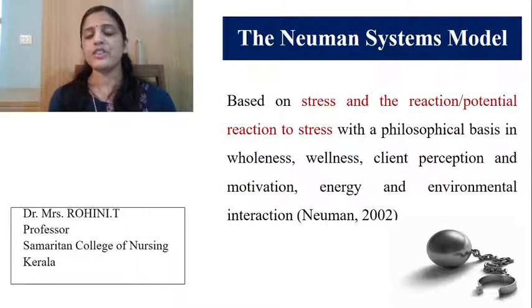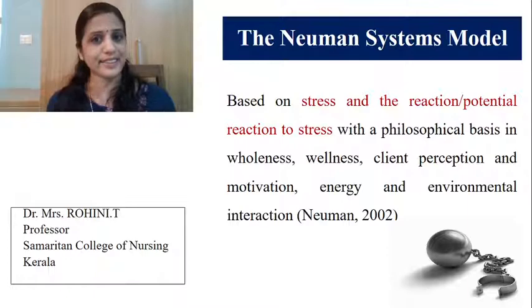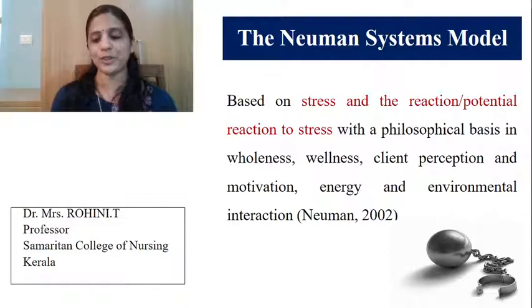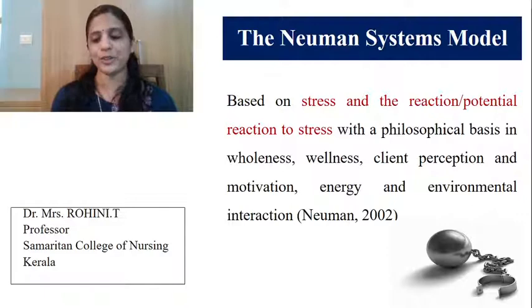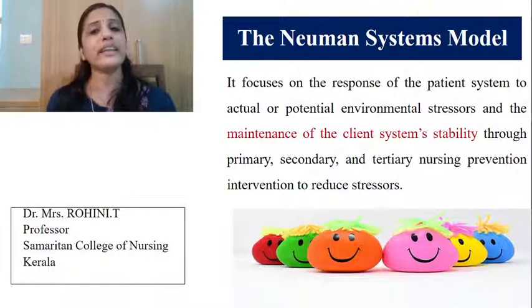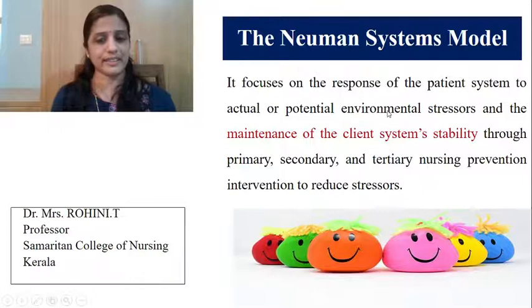Third, she drew upon her rich experiences in clinical, community, and theoretical perspectives of stress and system. And from various other theorists such as Caplan's levels of prevention, Lazarus, Selye, etc. The original title of the model was 'A Model for Teaching Total Person Approach to Patient Problems.' Later it was renamed 'Betty Neuman's Healthcare System Model: A Total Person Approach to Patient Problems,' and in 1985 it was finalized as the Neuman Systems Model.